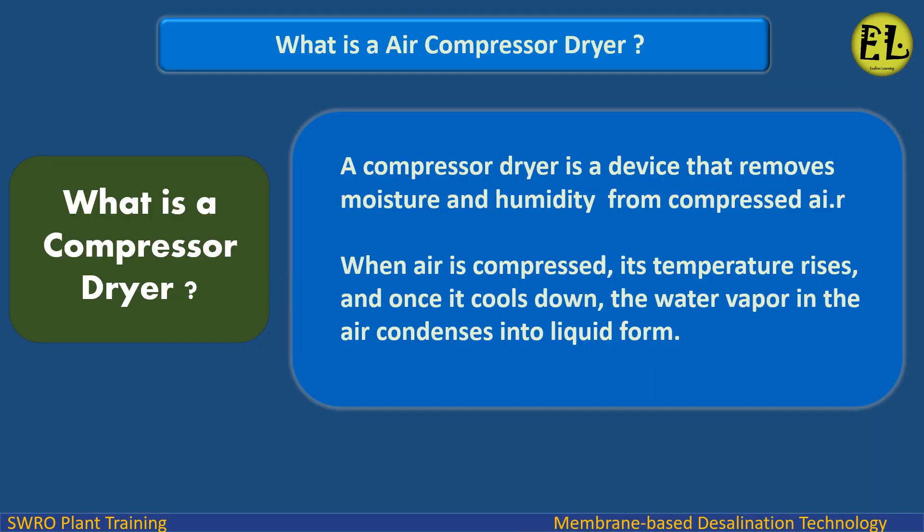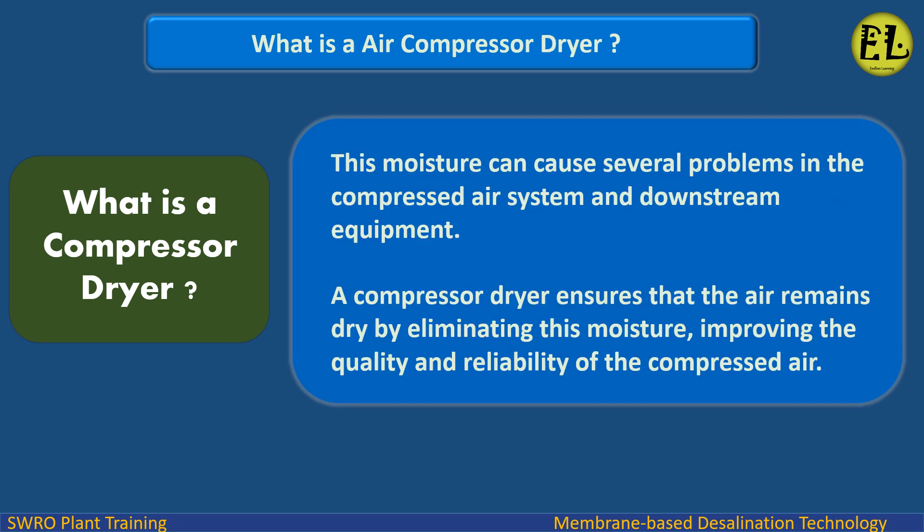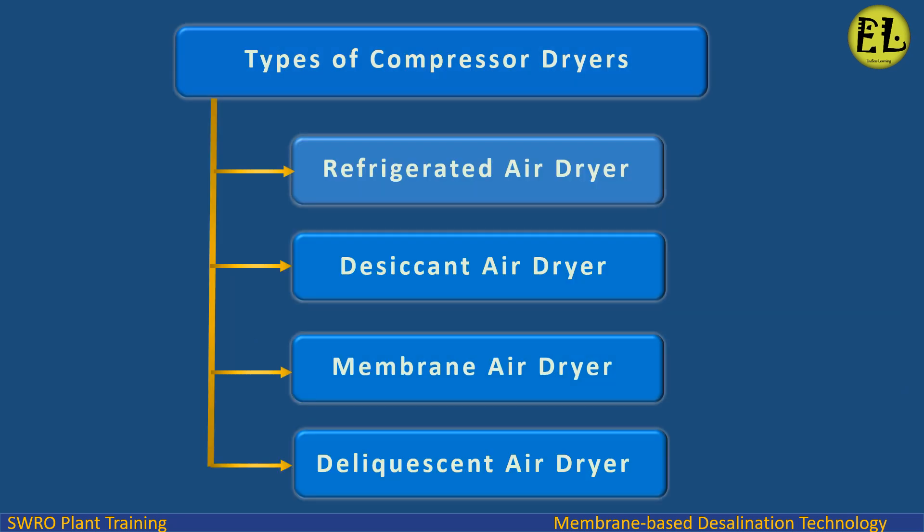What is a compressor dryer? A compressor dryer is a device that removes moisture and humidity from compressed air. When air is compressed, its temperature rises, and once it cools down, the water vapor in the air condenses into liquid form. This moisture can cause several problems in the compressed air system and downstream equipment. A compressor dryer ensures that the air remains dry by eliminating this moisture, improving the quality and reliability of the compressed air.